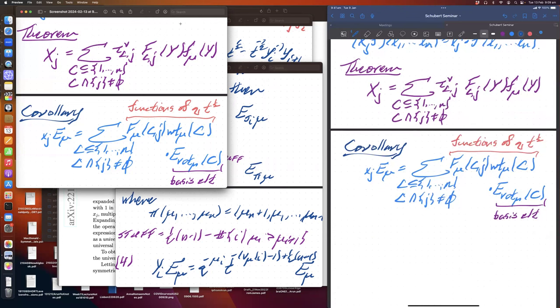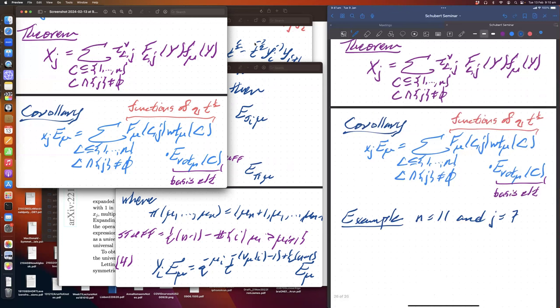Which is xj acting on e_mu is equal to the sum over subsets of 1 through n, such that that subset contains j. And then there's a factor f_mu_Cj, which is a constant. It's going to depend on qt. There's a factor weight mu of C, mu of C. And then there's a factor e of what I call rote mu of C. So this is my basis element here. And these guys will be functions of q and t. And so that will give an expansion of xj acting on e_mu.